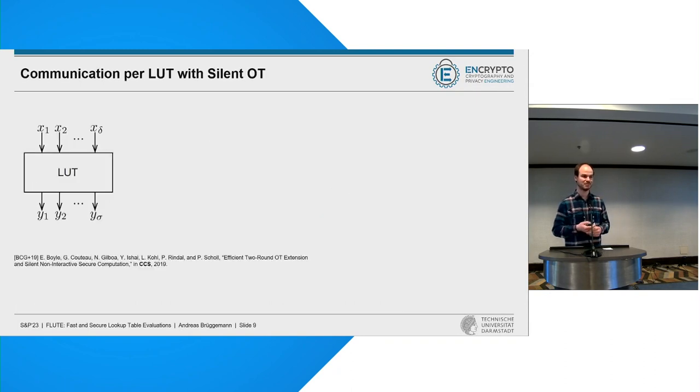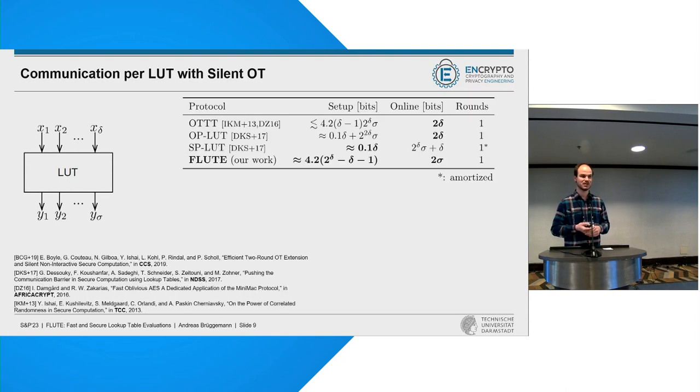So how does this actually perform? Well, if we look at some generic lookup table which has delta many inputs, sigma many outputs, the protocols compare is given in this table here. So here we look at OTT, OPLUT, SPLUT and FLUT, all when using silent OT. First of all, a single lookup table always takes a single round to evaluate. Also, we see that OTT and OPLUT have online communication which is two times the number of inputs as bits only. And FLUT has two times the number of outputs. As we will see later, in many cases, the number of outputs is a bit lower than the number of inputs, rendering FLUT even a bit better. On the other side, we have SPLUT, which has significantly higher cost in the online phase.